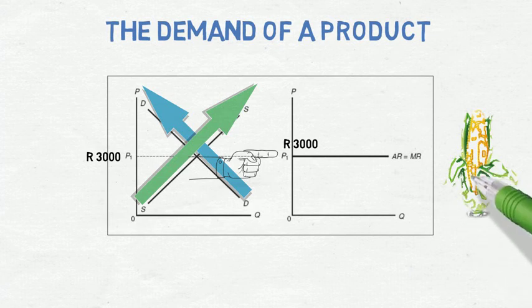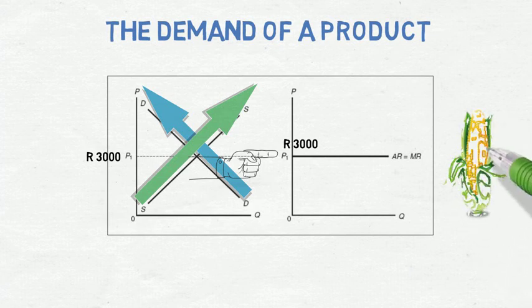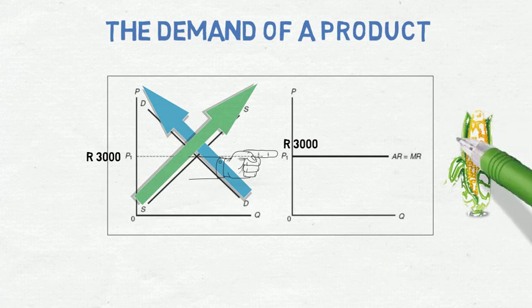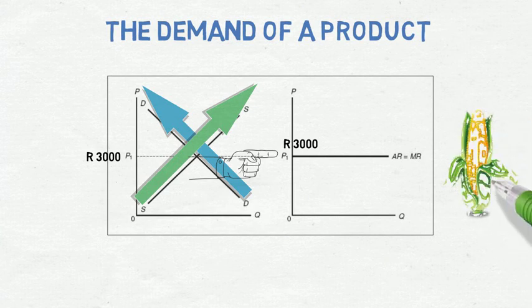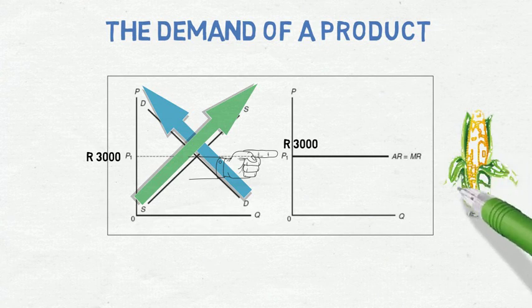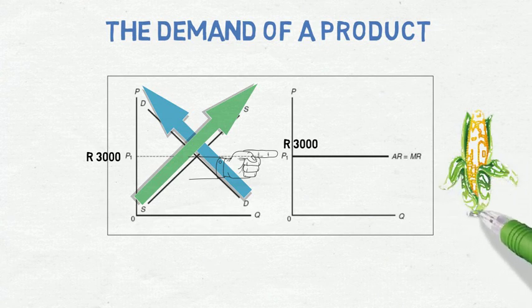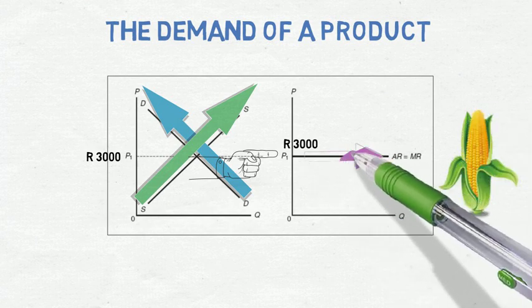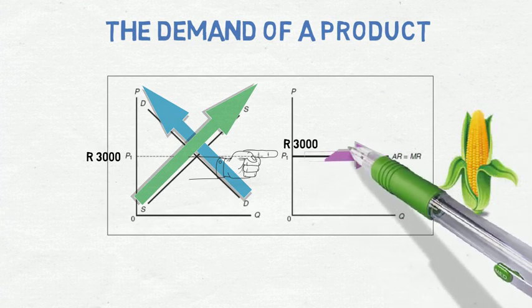Under a perfect competitive market, the individual firm faces a demand curve that is horizontal at the prevailing market price. This is the demand curve for the product. In a perfect competitive market, firms are price takers — take it or leave it. In class, we will look in more detail with regards to market prices.